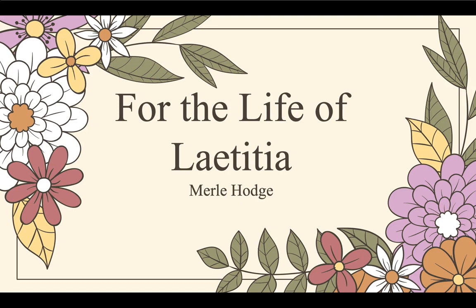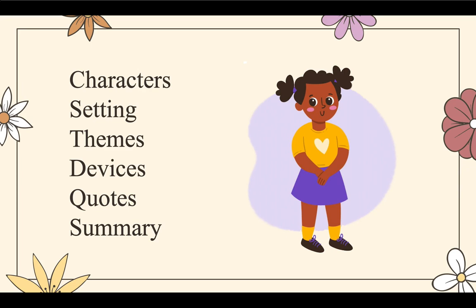Hello and welcome, or welcome back. The focus of this video is chapters 1 to 5 of the novel 'For the Life of Letitia' by Merle Hodge. The chapters in this book are short, that's why I will cover five chapters at a time. For this video, I will be using the format I discussed in my previous video 'How to Study for English B.' If you haven't watched it yet, I'd advise you to do so.